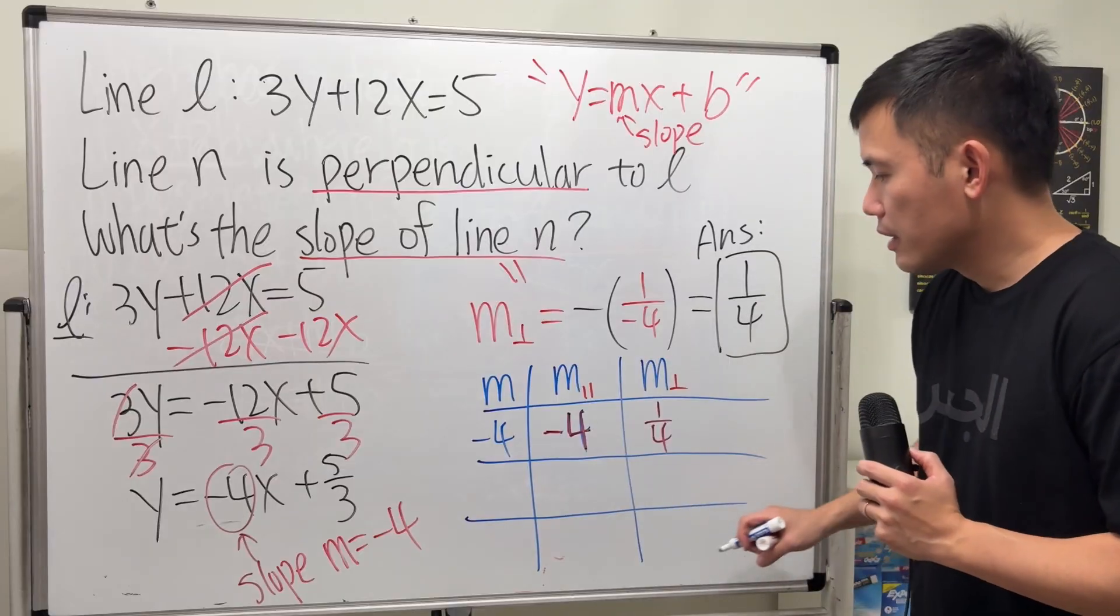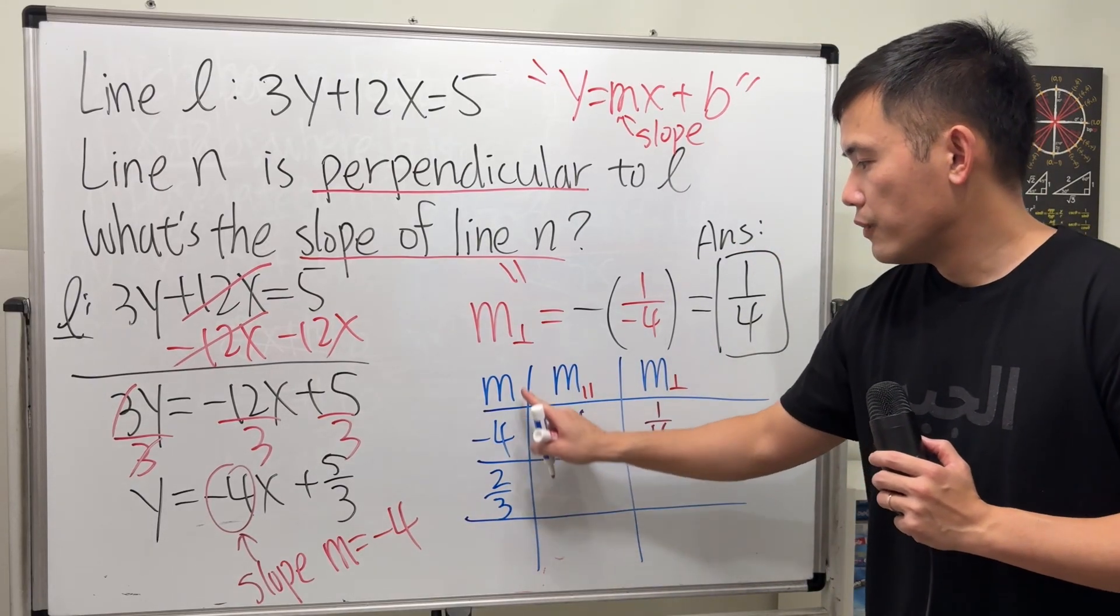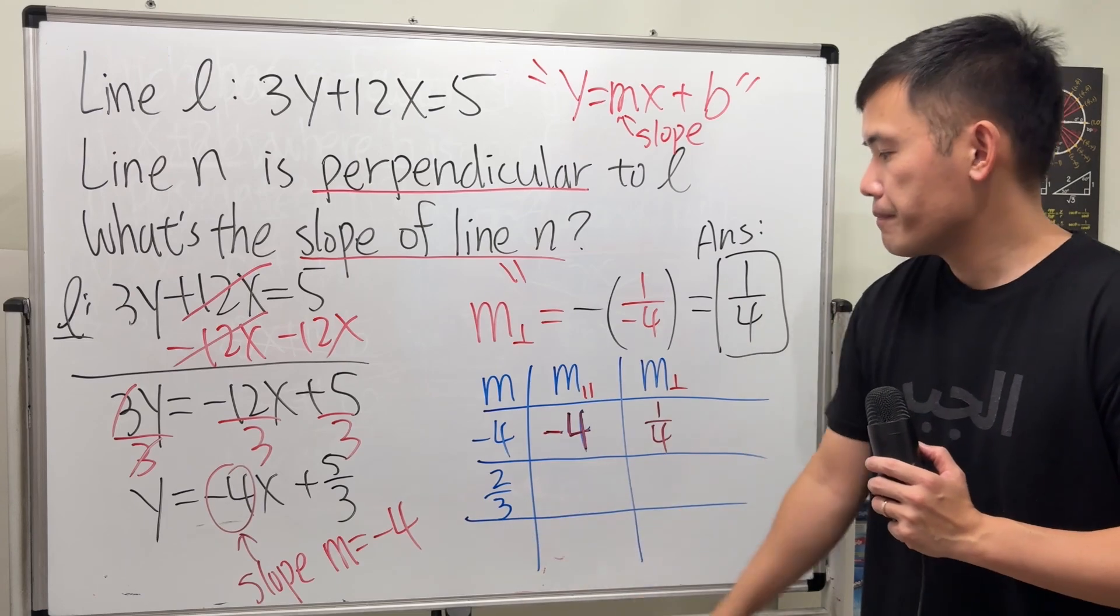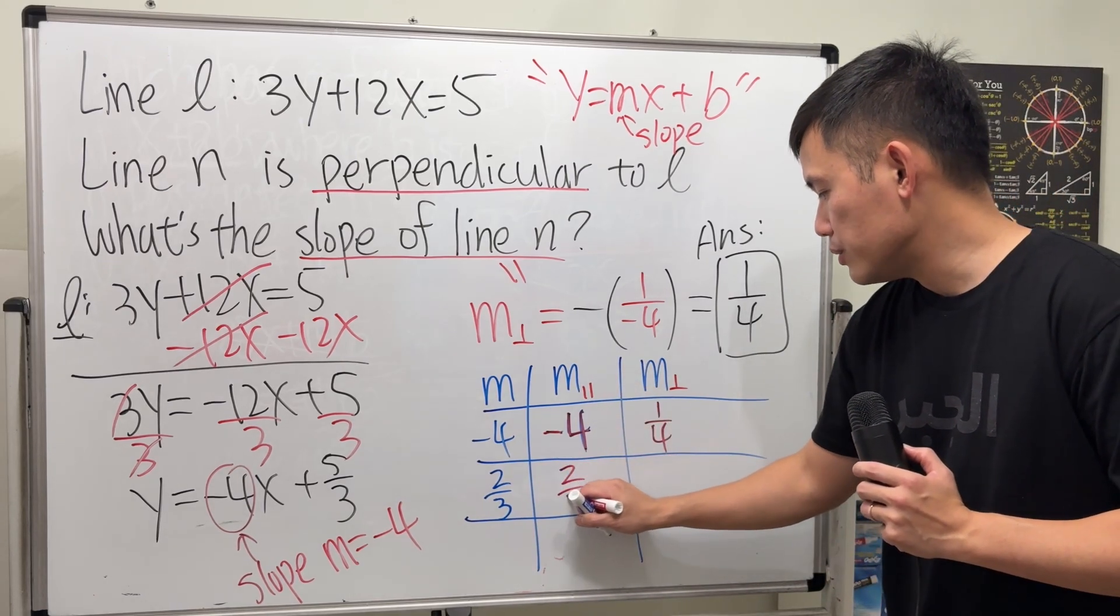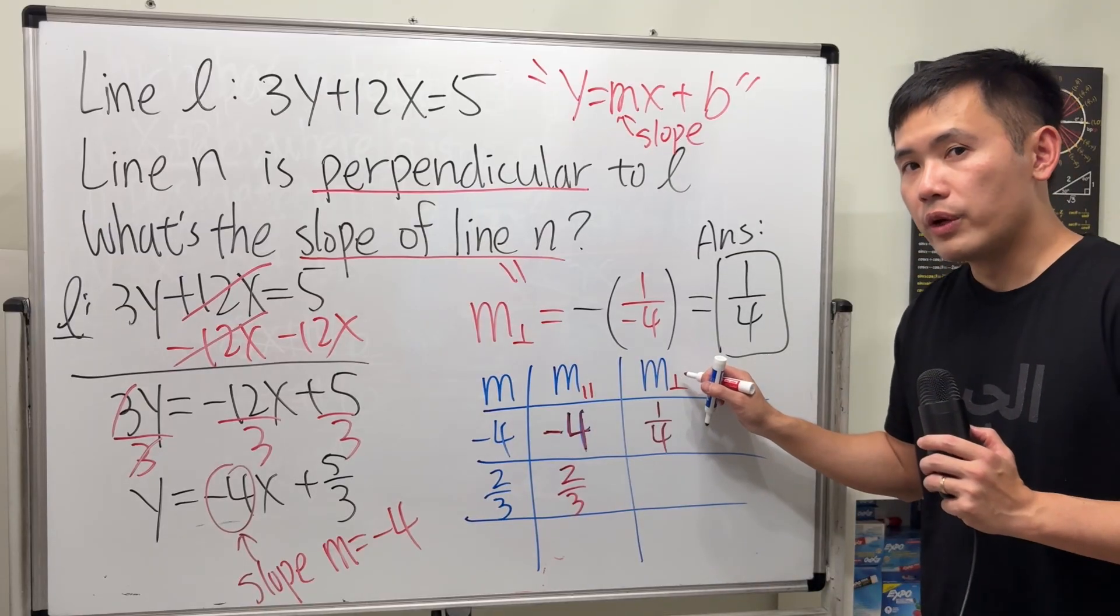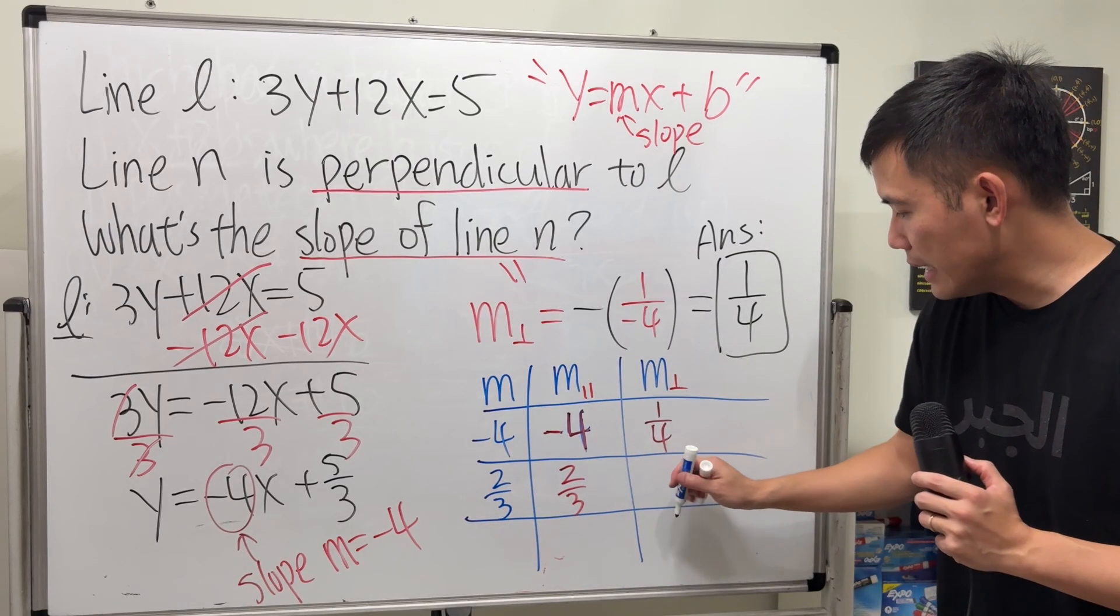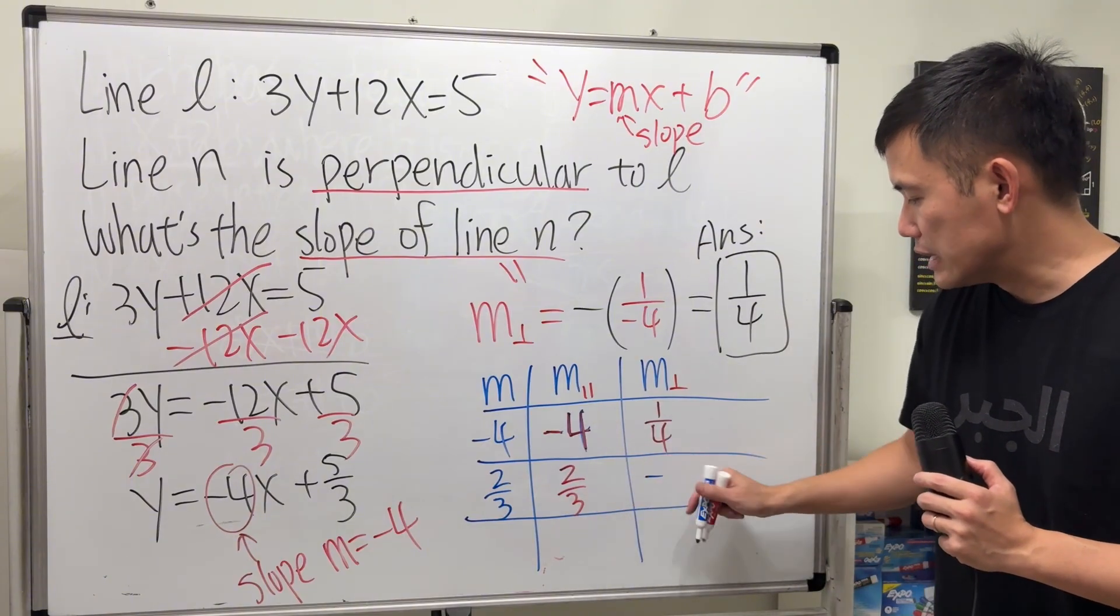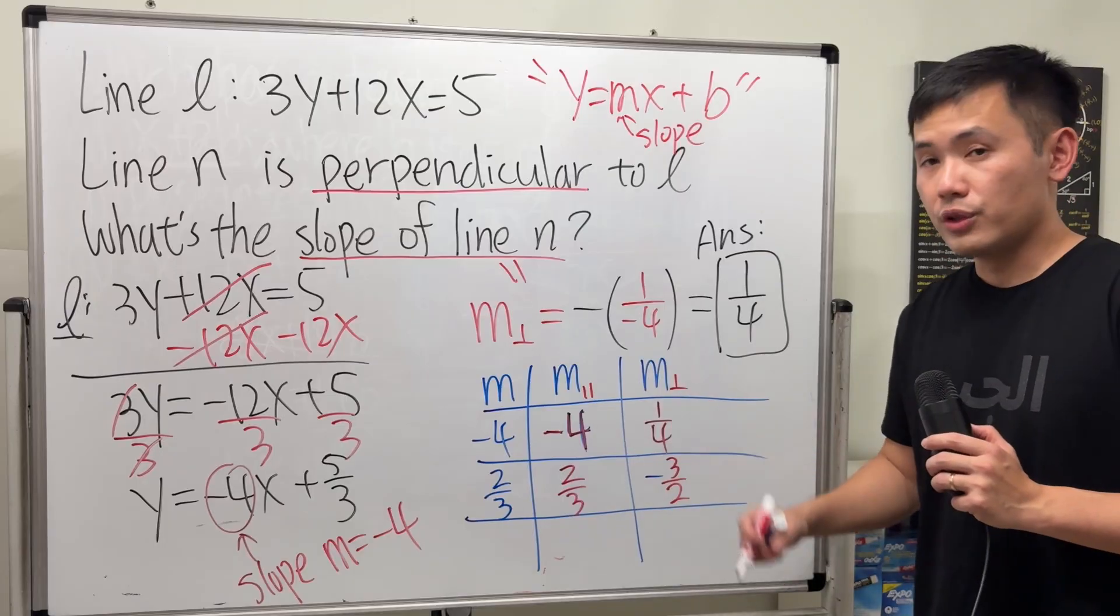Now, another example. If you have, let's say, 2 over 3 for the original M, then the parallel line will be the same slope, positive 2 over 3. But, for the perpendicular slope, it's the opposite sign, so it's going to be negative. And do the reciprocal. So, negative 3 over 2. Just like that.